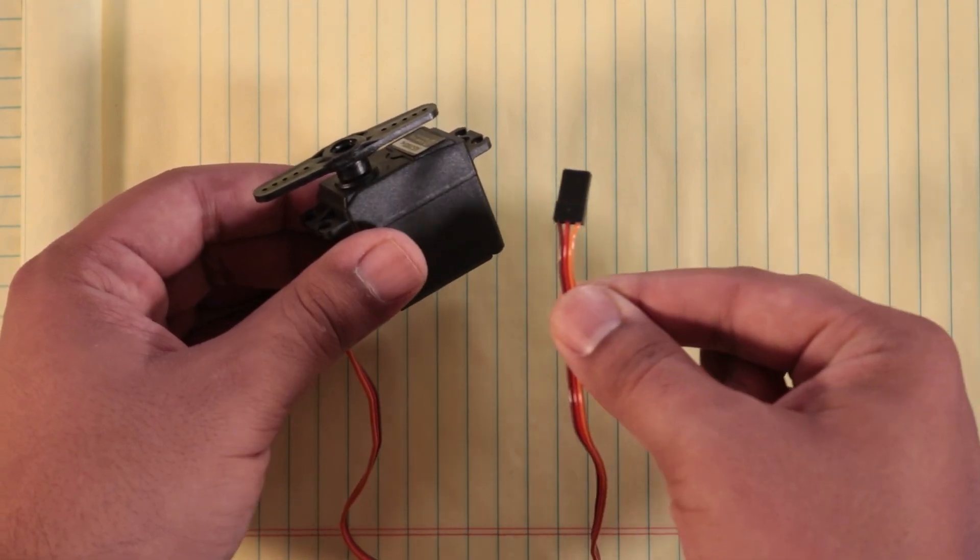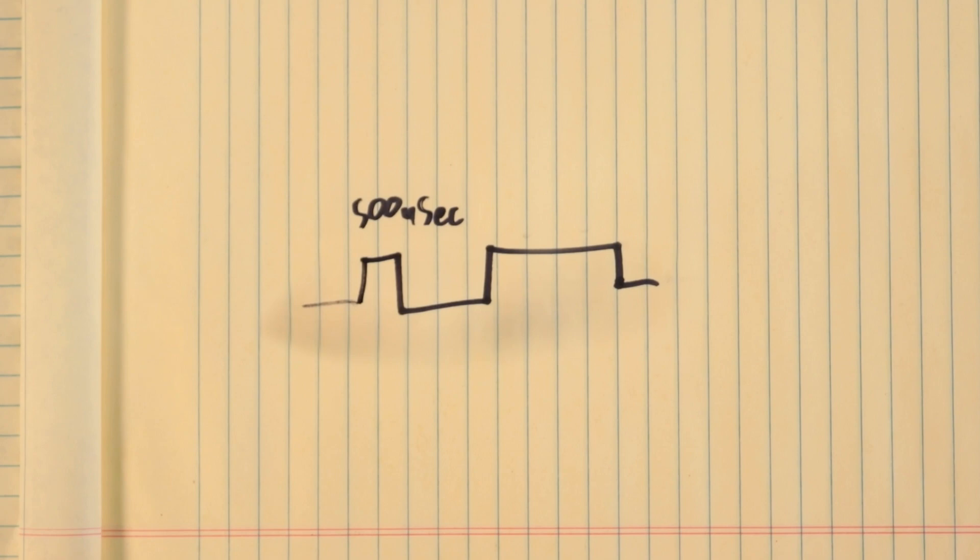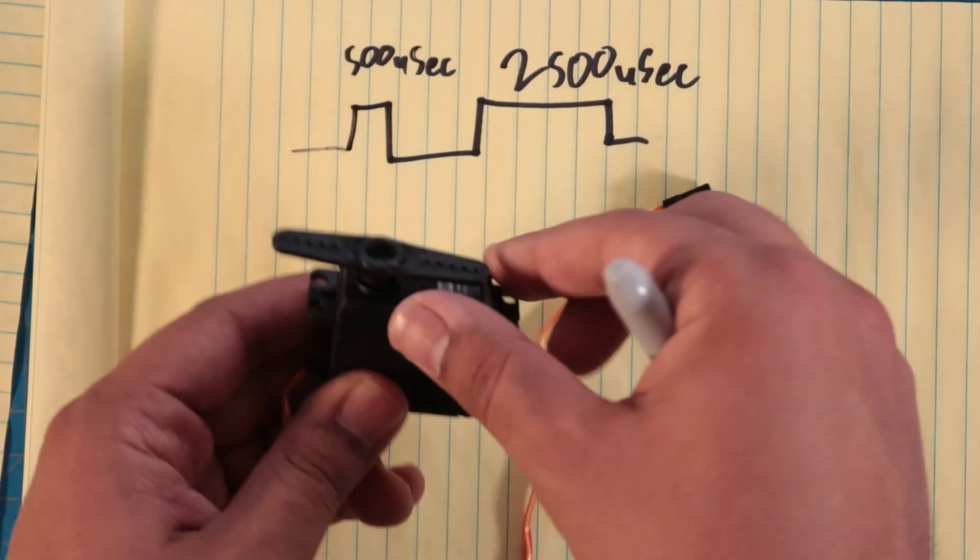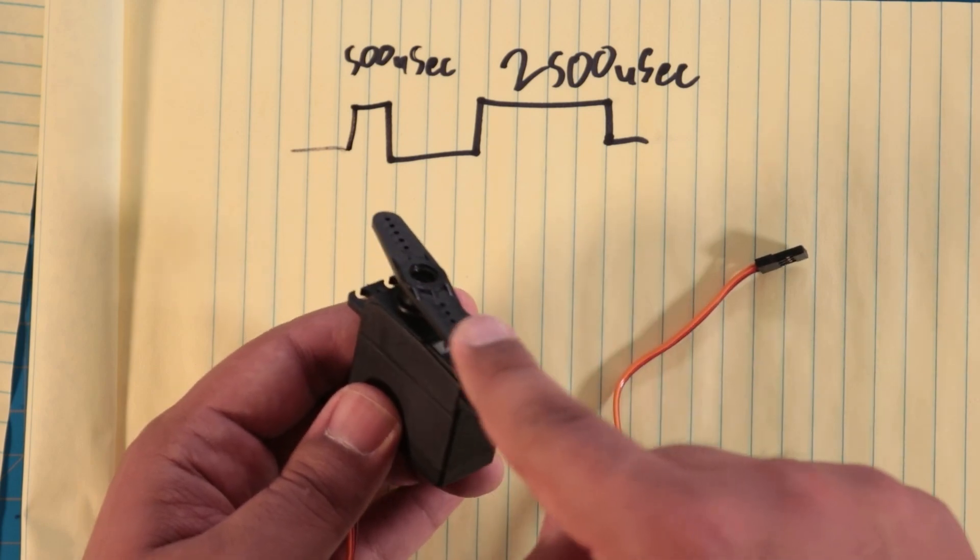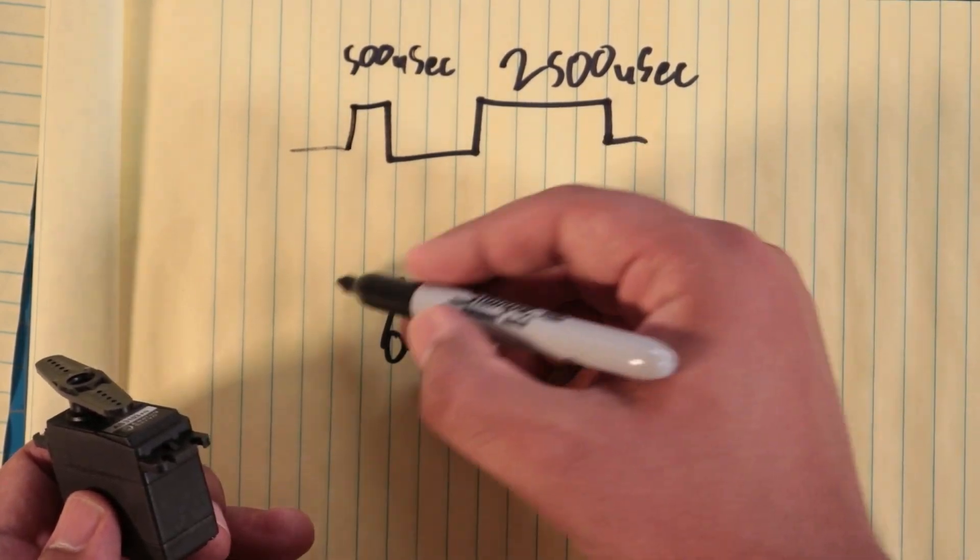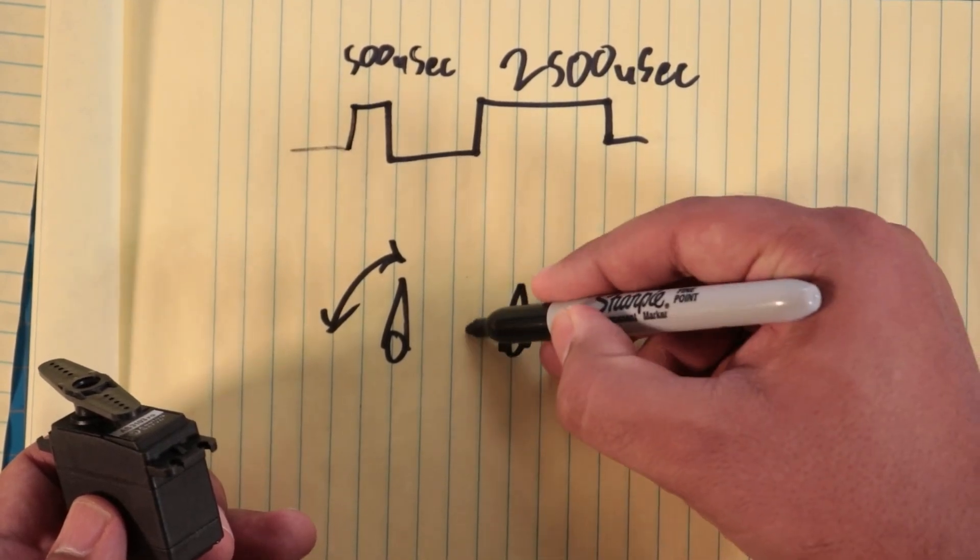This signal is determined—let's say I have a 500 microsecond pulse width or a 2,500 microsecond pulse width. So if I have different pulse widths sent on the signal line of this servo, it will determine how far it will move along its range of motion.